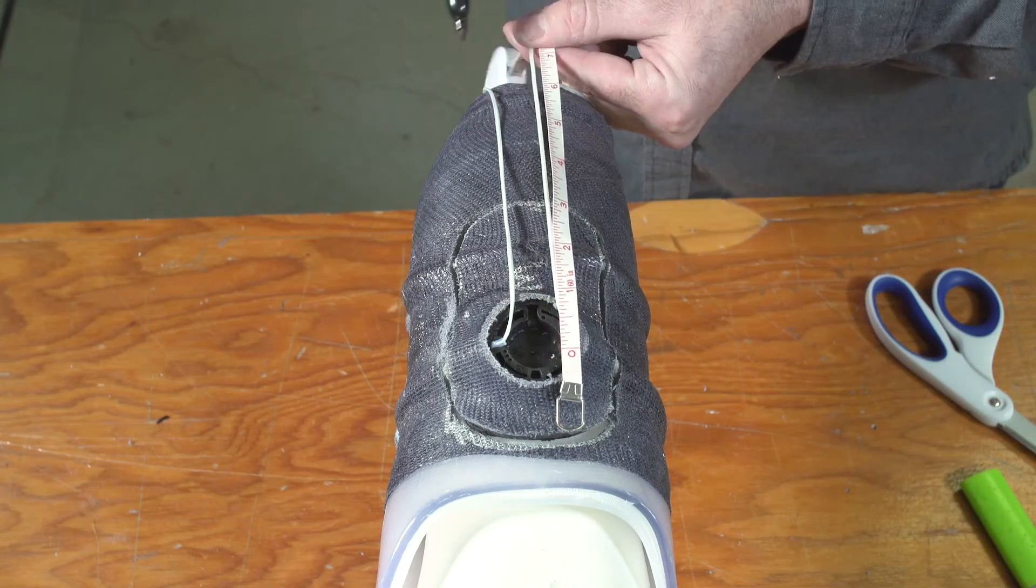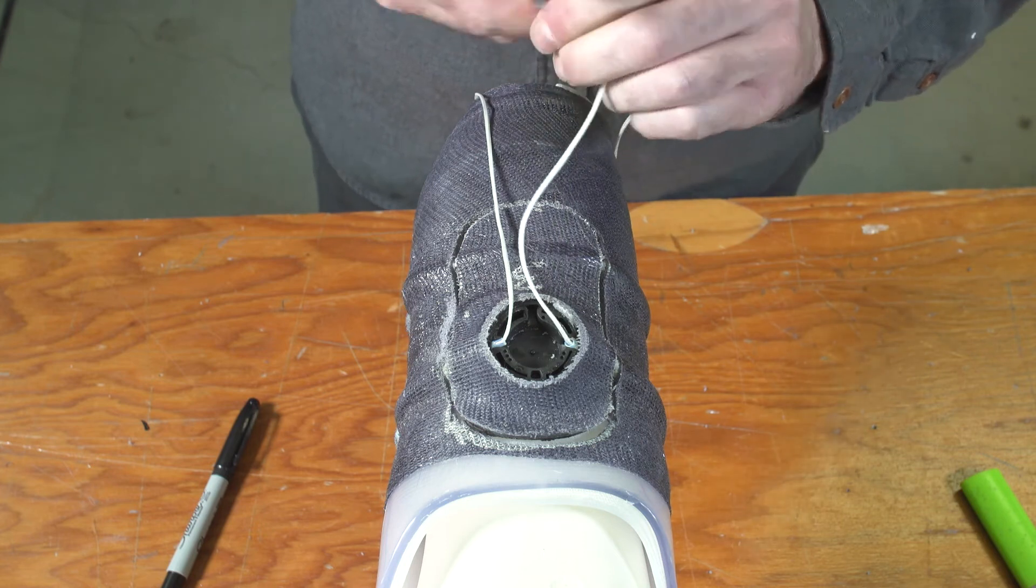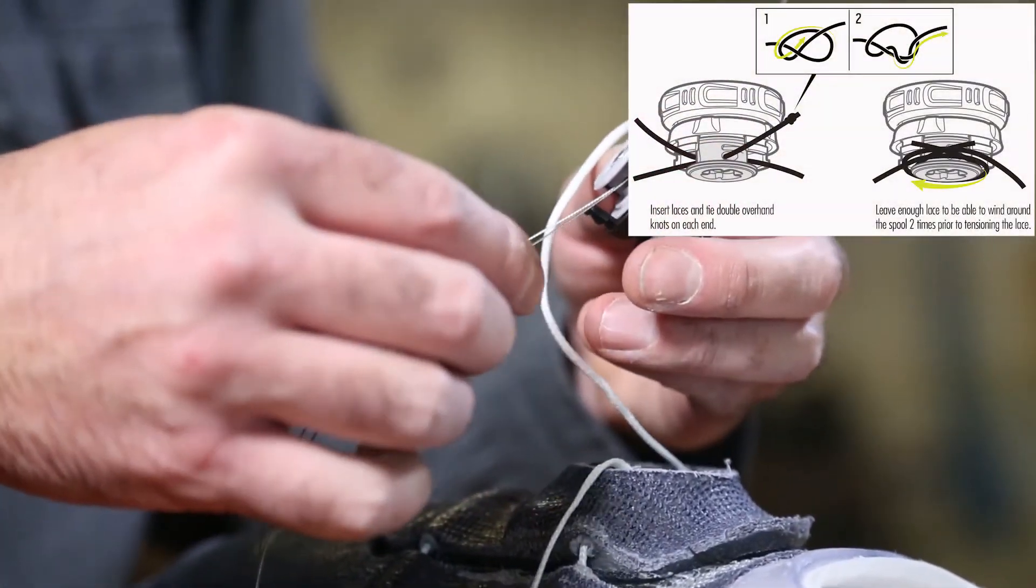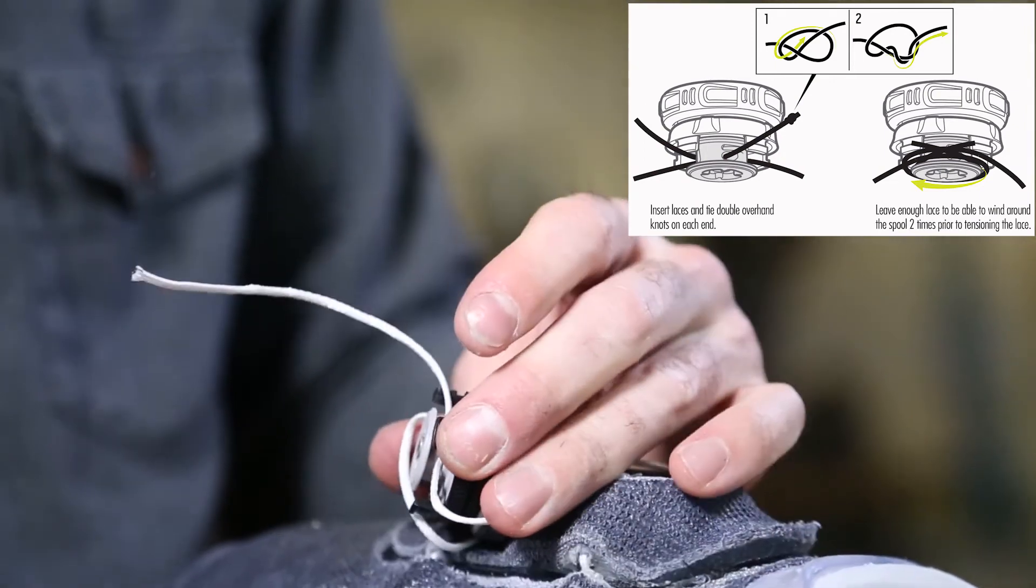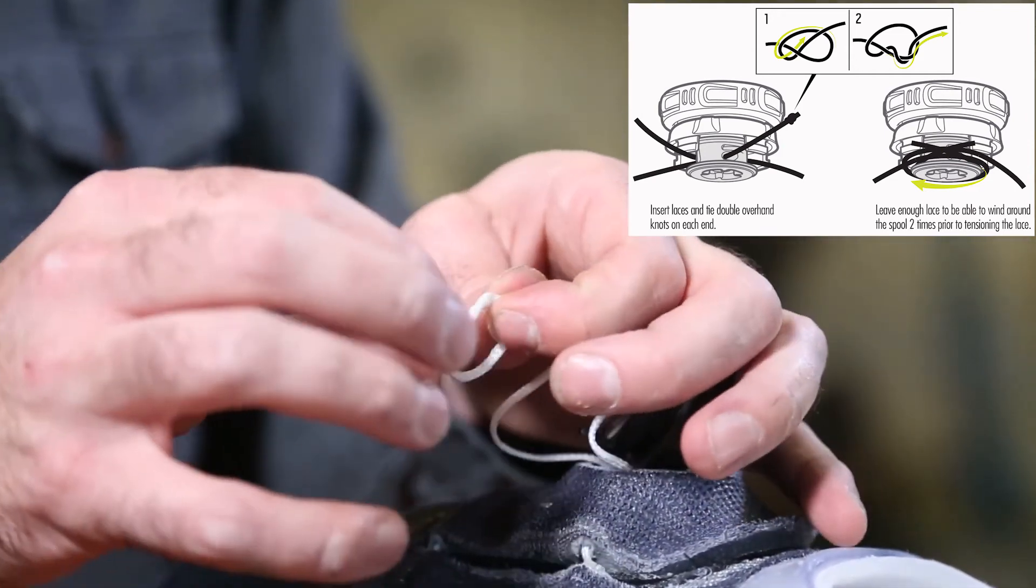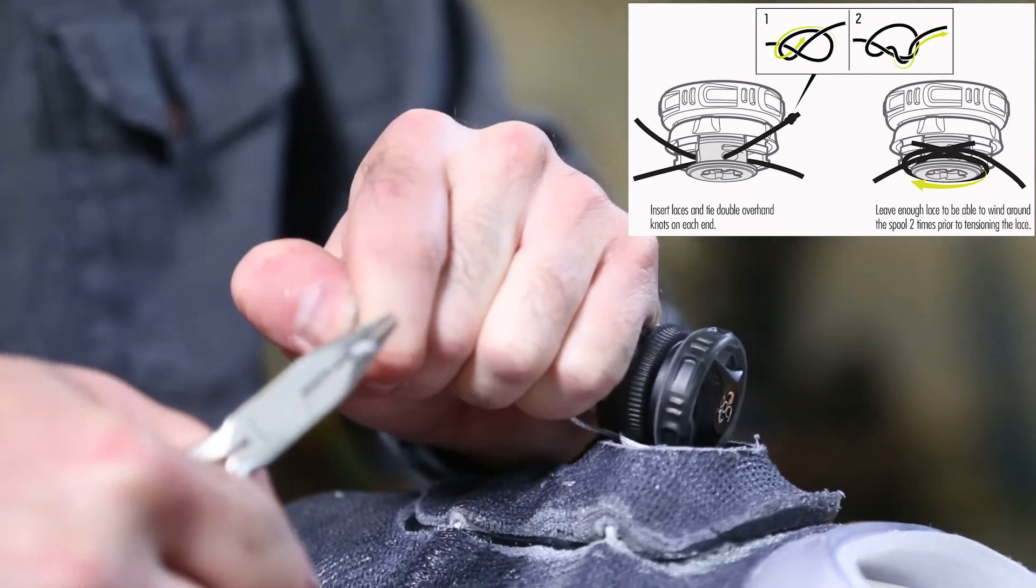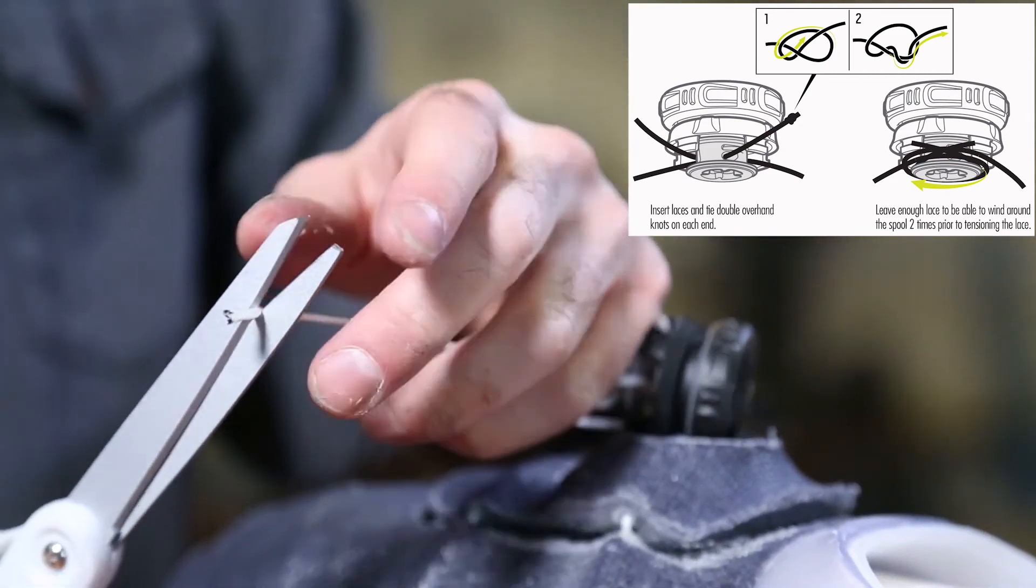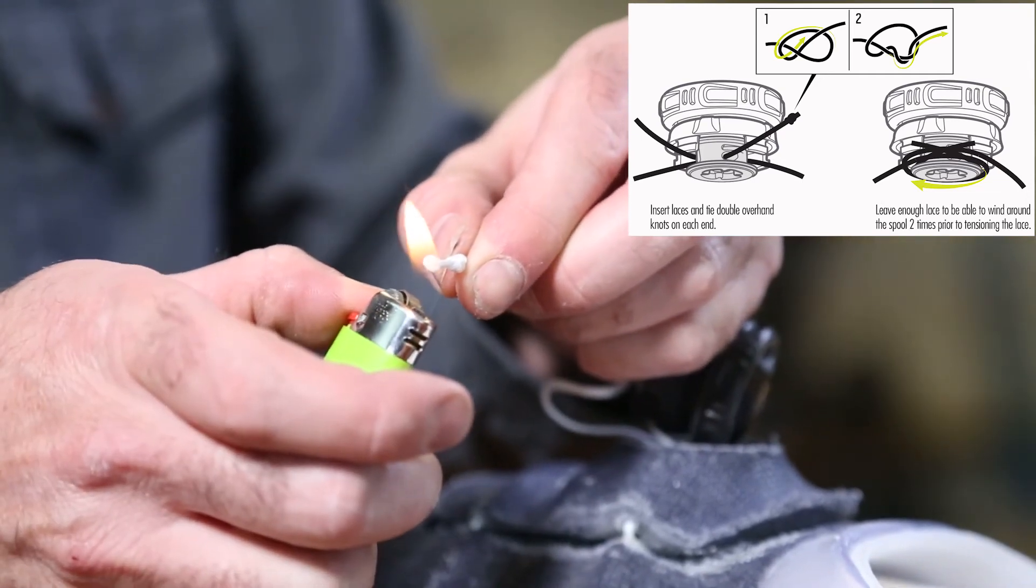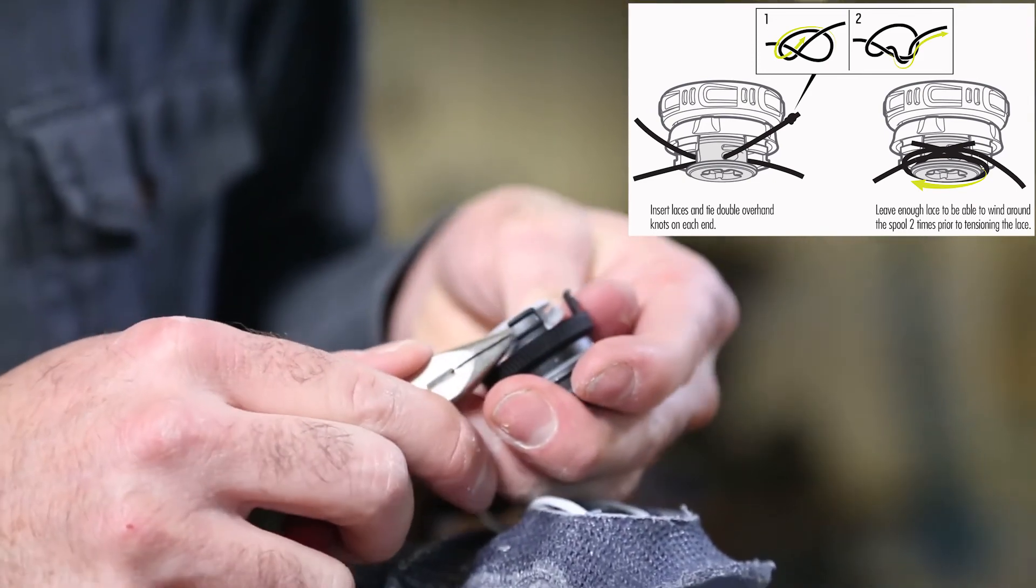Next, attach the lace to the dial. Cut the lace to length with the lace ends extending about 15cm beyond the dial base on both sides. Then use the wire lacing tool to thread the lace into one of the small holes on the dial and out of the corresponding large hole on the other side. Tie a double overhead knot. Trim, burn the end, and pull the knot into the dial. Repeat for the other lace end.